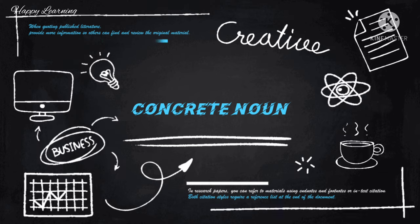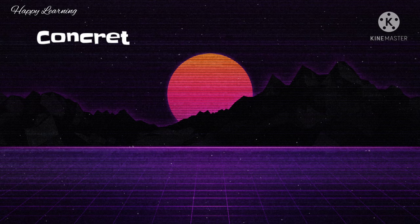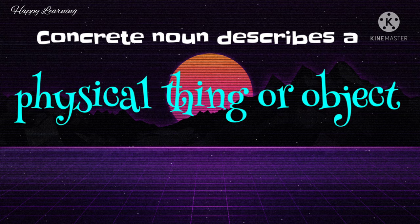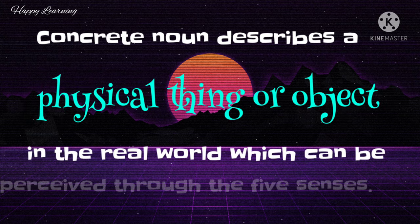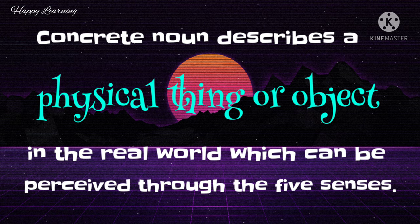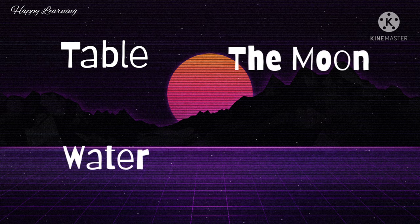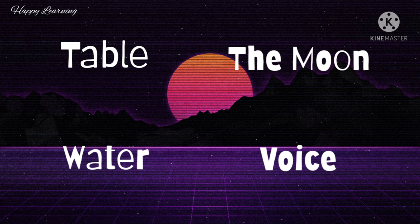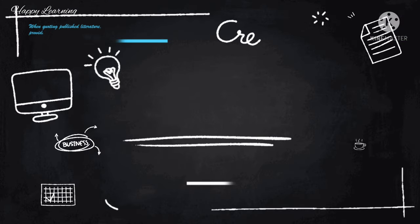Third comes the concrete noun. A concrete noun describes a physical thing or object which can be perceived through our five senses — we can touch, taste, smell, or see it. For example: table (we can touch and see it), the moon (we can see it), water (we can touch and see it), and voice (we can hear it). Anything we can perceive through any of our five senses is a concrete noun.